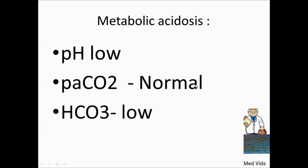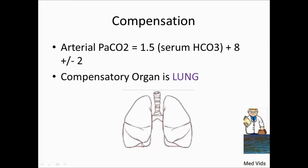If PaCO2 is normal, it doesn't indicate a respiratory cause. For metabolic acidosis, the compensatory organ is the lung. The formula is: expected PaCO2 = (1.5 × serum bicarbonate) + 8 ± 2. If the calculated value doesn't match lab values, the patient is not compensating; if it matches, compensation is occurring.